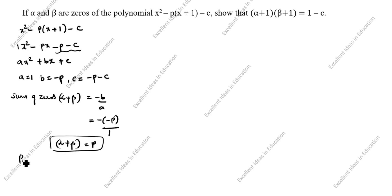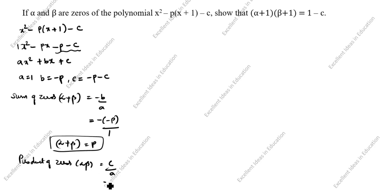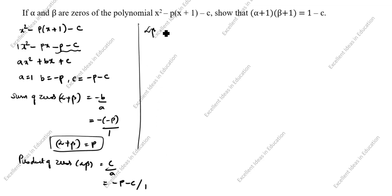Next, product of zeros: alpha beta equals c by a. What is c value? c is minus p minus c, divided by a which is 1. So alpha beta is equal to minus p minus c.